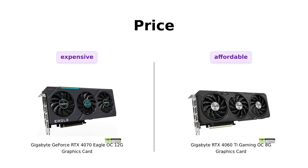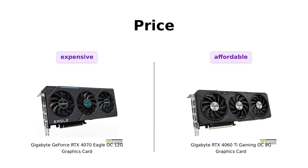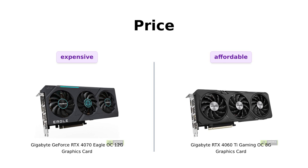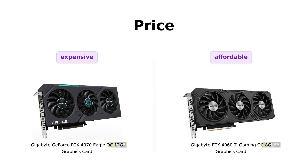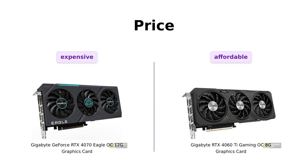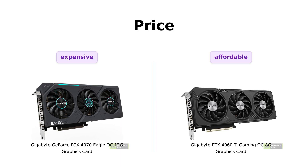Let's start with the price. The Gigabyte GeForce RTX 4070 Eagle OC 12G is priced at $639, while the Gigabyte RTX 4060 T Gaming OC 8G comes in at $429. As we can see, there is a significant price difference between the two. If budget is a concern, the RTX 4060 T might be the more affordable option for you.